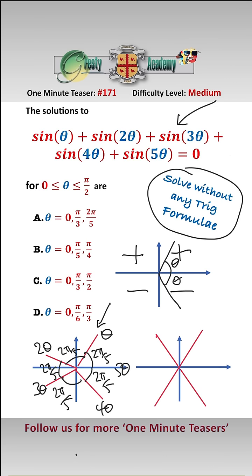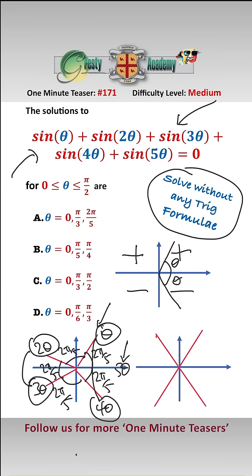We can see that the sine of theta cancels the sine of 4 theta, and the sine of 2 theta cancels the sine of 3 theta, and the sine of 5 theta is 0. Therefore we know that 2π/5 is one solution. We also have the trivial solution theta equals zero.